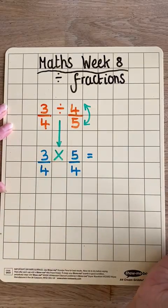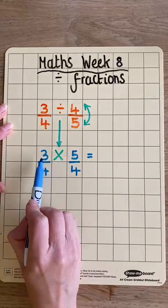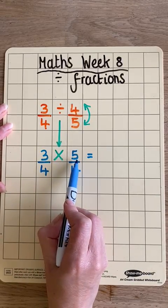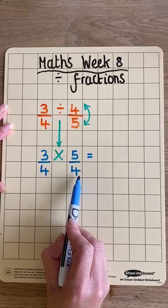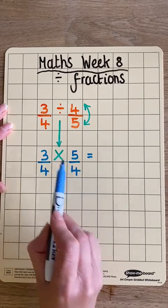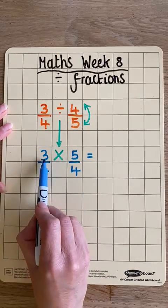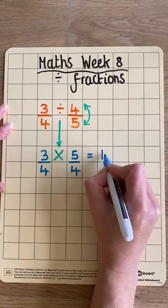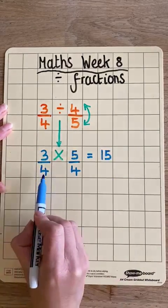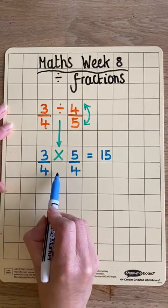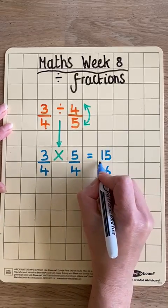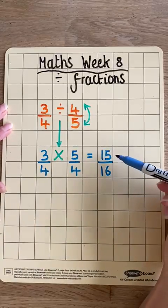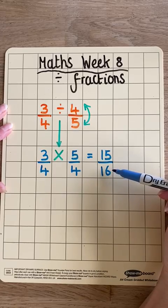Now we can multiply our fractions. Remember, we times the numerators by each other, and then we times the denominators by each other. 3 times 5 is 15. 4 times 4 is 16. The answer is 15 sixteenths.